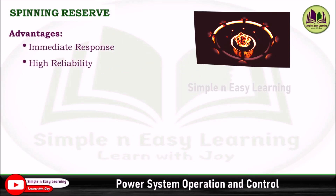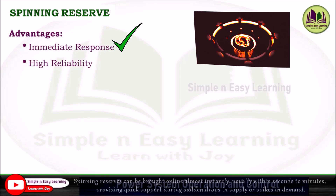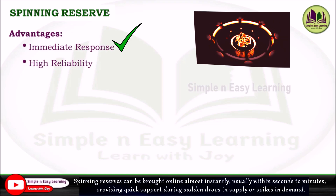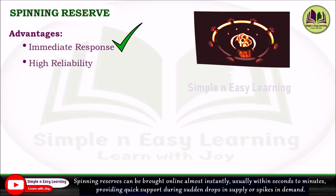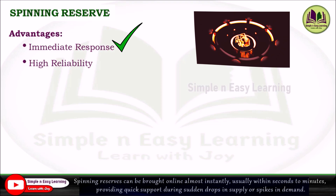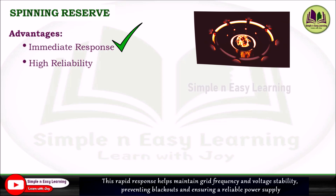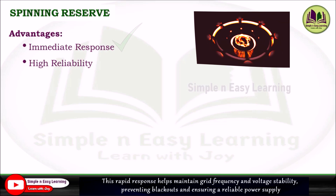Now we will see some advantages of spinning reserve. The first is immediate response. Spinning reserve can be brought online almost instantly, usually within seconds to minutes, providing quick support during a sudden drop in supply or spikes in demand. This rapid response helps maintain grid frequency and voltage stability, preventing blackouts and ensuring a reliable power supply.